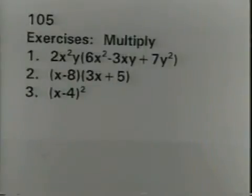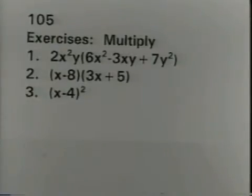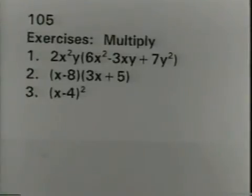Now it's time for you to make sure that you understand the concepts. I'm going to give you some exercises. Be sure to copy down all three problems, then stop the tape, work the problems, and restart the tape to check your answers. The first problem: 2x squared y times the quantity 6x squared minus 3xy plus 7y squared. The second exercise: the quantity x minus 8 times the quantity 3x plus 5. The third: the quantity x minus 4 squared.